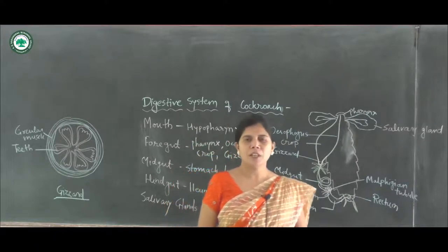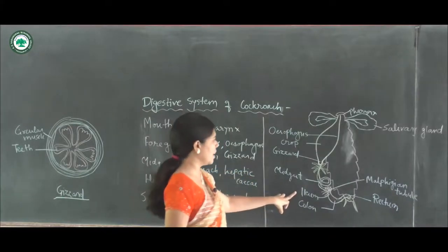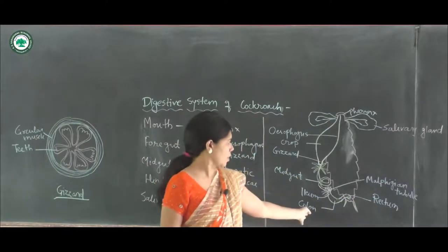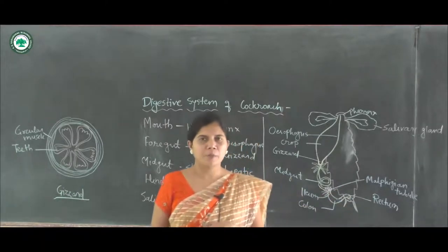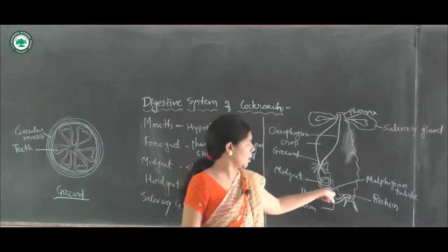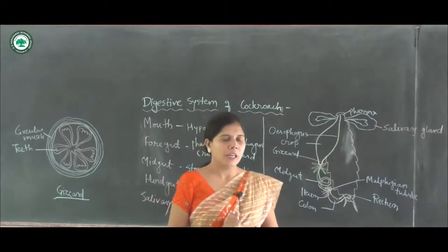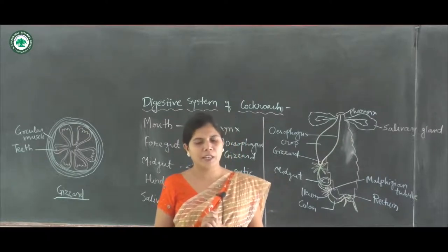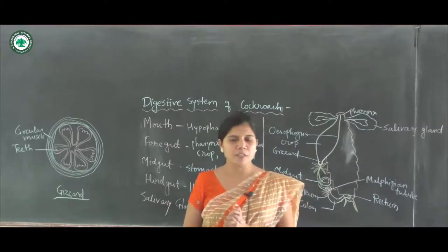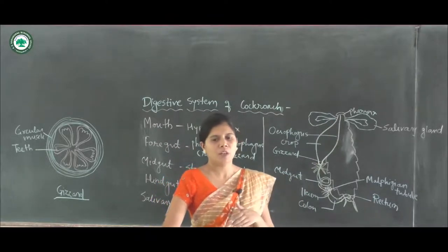The midgut is continued with the hindgut. The hindgut consists of the ileum, colon, and rectum. The ileum is a very short, narrow part of the hindgut. The Malpighian tubules open into the anterior lumen of the ileum near the junction of the midgut and hindgut. The posterior region of the ileum contains a sphincter which sends nitrogenous waste and undigested food towards the colon.